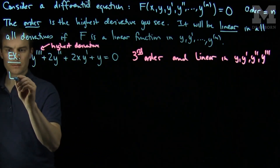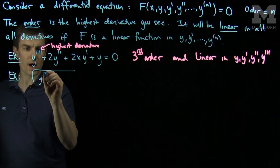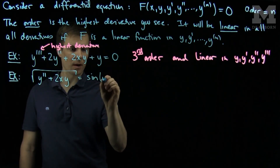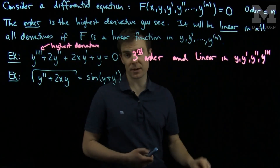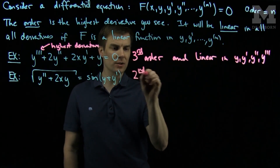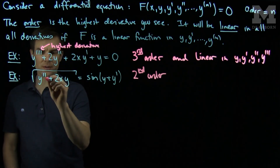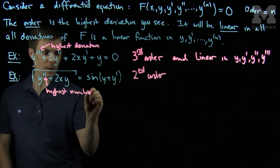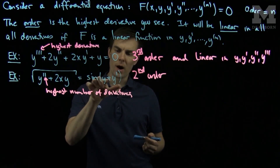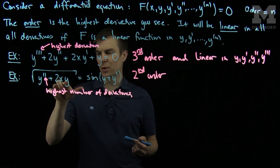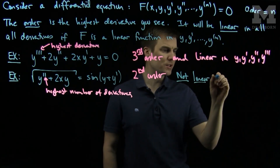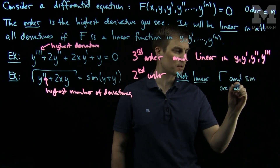Let's take a look at another example. The square root of y double prime plus 2xy is equal to the sine of y plus y prime. This is a second order equation, since the highest number of derivatives I see is 2. But this expression is non-linear. The sine is a non-linear function, so y plus y prime inside the sine is a non-linear expression. And I have y double prime plus 2xy under a square root — the square root is not linear, so this is not linear. The reason is that the square root and sine functions are not linear functions.